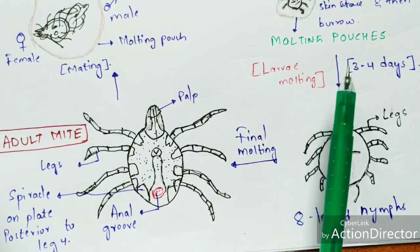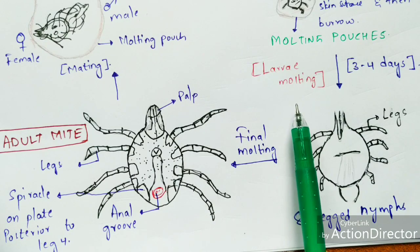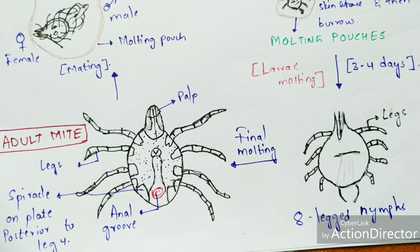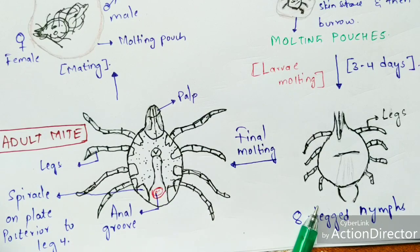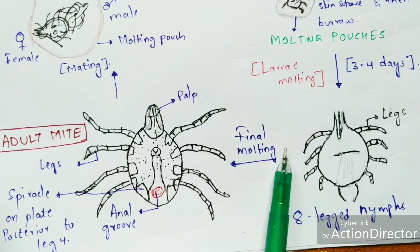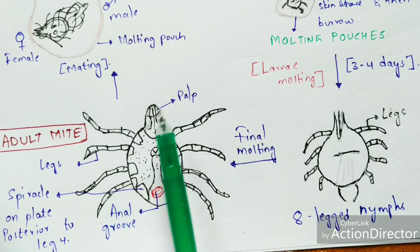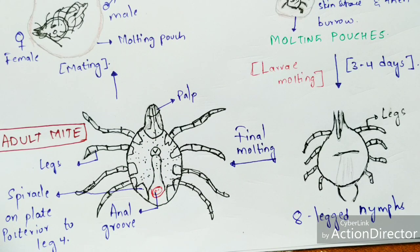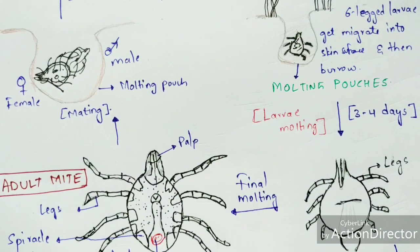There are totally two moltings: larva molting and final molting. In larva molting, the six-legged larva transforms into an eight-legged nymph. In the final molting, the sexual portions and anal groove get developed properly in the mite, and the eight-legged nymph transforms into the adult mite. The anal groove, spiracular plates at the posterior region near leg four, and the palps with sharp projections are visible in the adult mite. All of this occurs within the molting pouch.